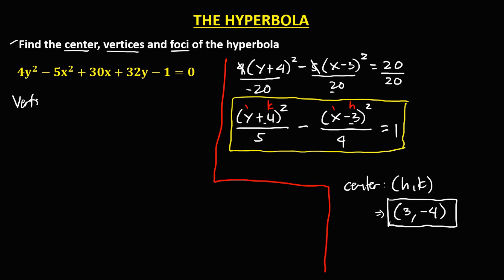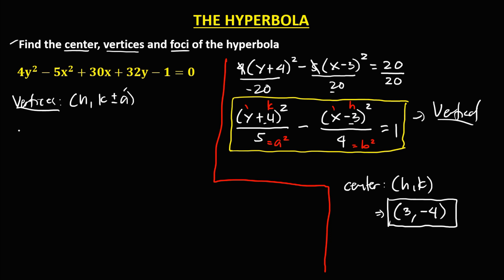For the vertices: since this hyperbola is vertical — because x squared is negative — the formula for the vertices is (h, k plus or minus a). Take note that in the hyperbola, the first denominator is a squared, so 5 is a squared and 4 is b squared. To solve for a: since a squared equals 5, take the square root, so a equals square root of 5.